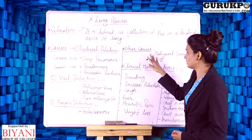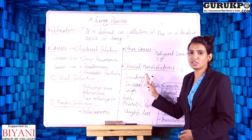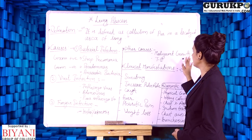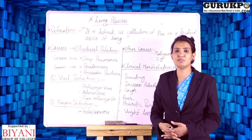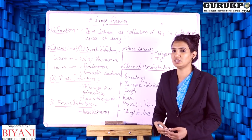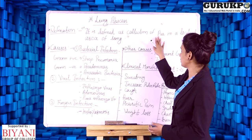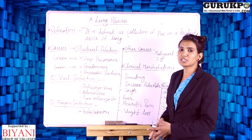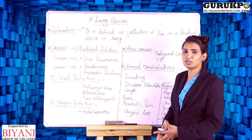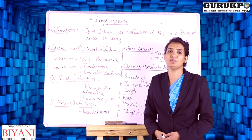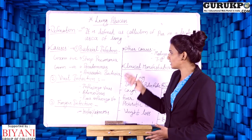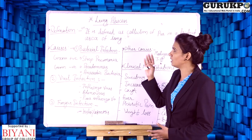Some other causes of lung abscess include: first is malignant growth — meaning cancer — where pus collection can occur in a particular part due to malignant growth. Second is tuberculosis (TB) — if a patient already has tuberculosis, lung abscess can also develop in that condition.